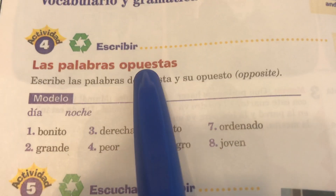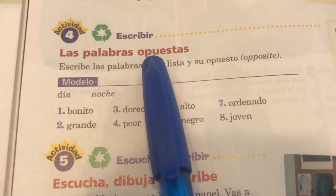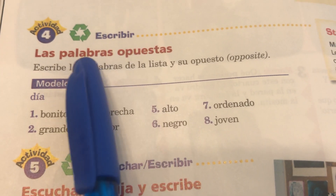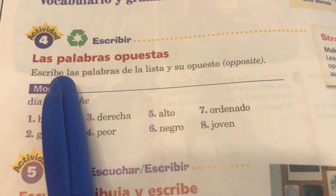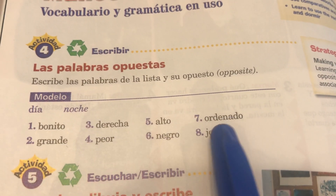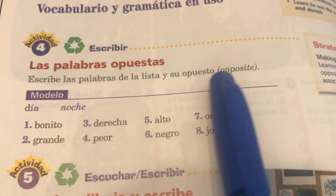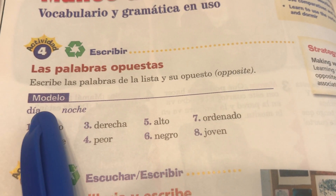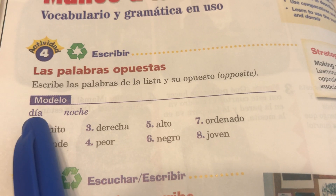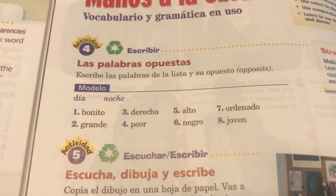Las palabras opuestas — do you remember what I said that "opuestas" means? Opuestas means opposite, so "the opposite words." Escribe — write down — las palabras de la lista, the words from the list, and their opposite. Right here they give us the example, el modelo: día, and the opposite of día is noche.